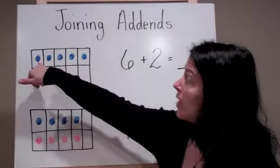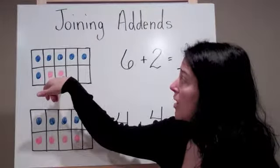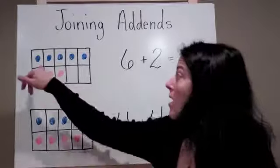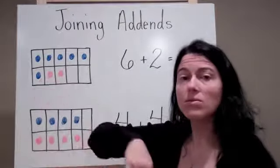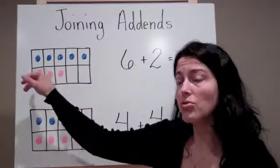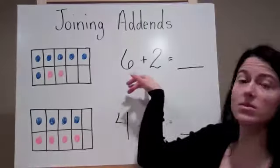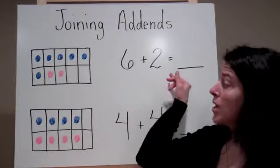I have a tens frame and right here I have six blue counters and two red counters. So now I can use these two to join and find out how many total counters do I have. So I start with six, seven, eight. So I know that six plus two equals eight.